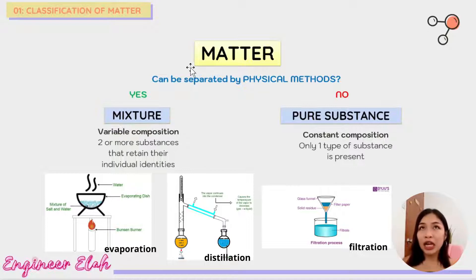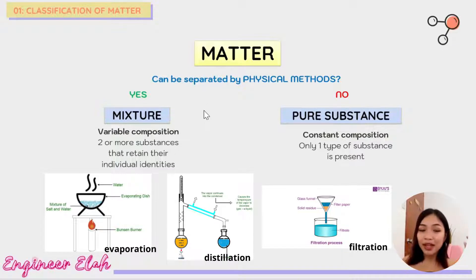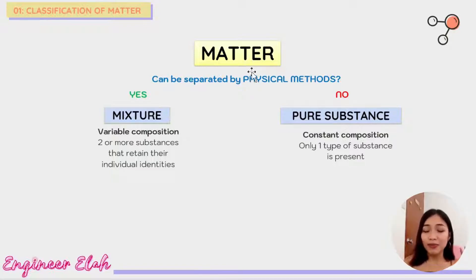For example, given water — can it be separated by physical methods? If you evaporate it, everything evaporates; there is nothing to separate. If you use distillation, only pure water comes out. So no matter what physical method you apply, you cannot separate it. This means it is a pure substance.